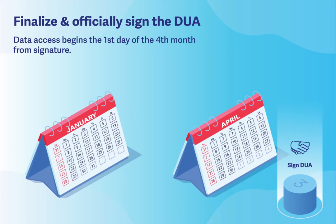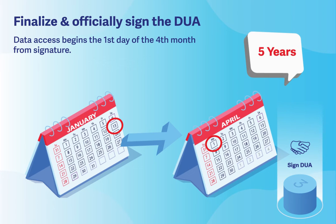For example, for a DUA effective January 13, 2024, you can expect to gain access to the data beginning April 1, 2024. Access to NHSN data lasts for five consecutive years. So, for this same example, if you do not renew your DUA, you will be removed from access April 1, 2029.